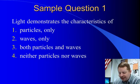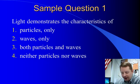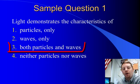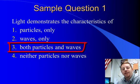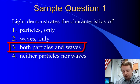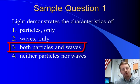So sample question one. Light demonstrates the characteristics of particles only, waves only, both particles and waves, or neither particles nor waves. Well, the wave-particle duality is all about the fact that light demonstrates characteristics of both particles and waves. And depending on the situation, it may display more or less of one of those natures, the wave or the particle. So correct answer, three.